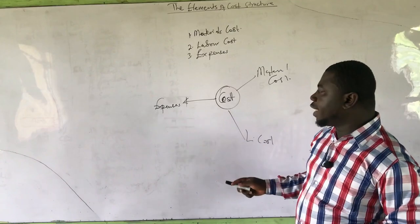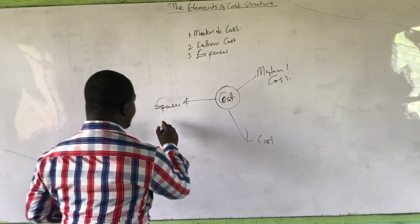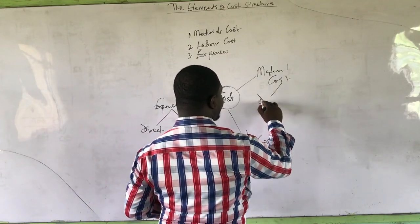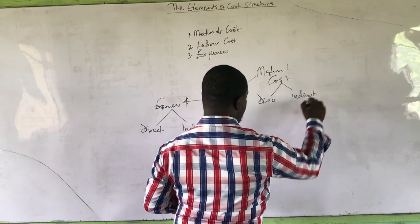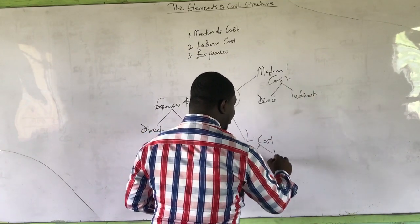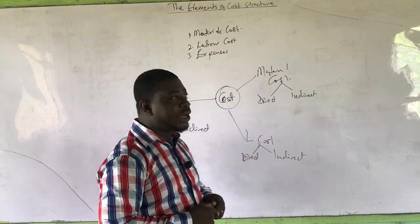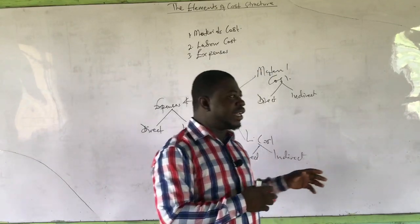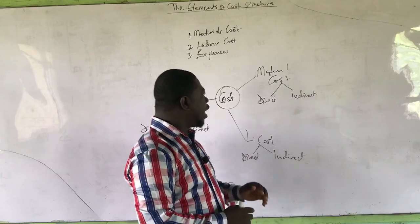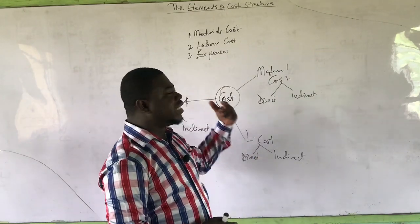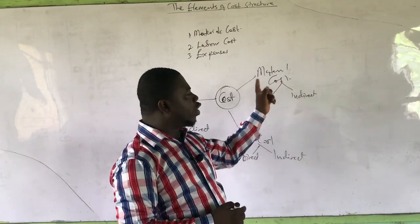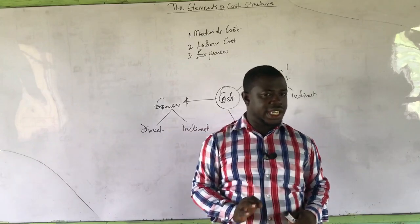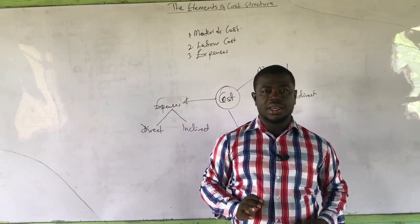In each of these three cases — material, labour, and expenses — we have a direct nature and an indirect nature. We have direct expenses and indirect expenses, direct material costs and indirect material costs. When we look at the direct and indirect nature of cost, it is about traceability, as I have already explained in cost classification. Note that there is a difference between direct material and direct material cost — they are not the same.